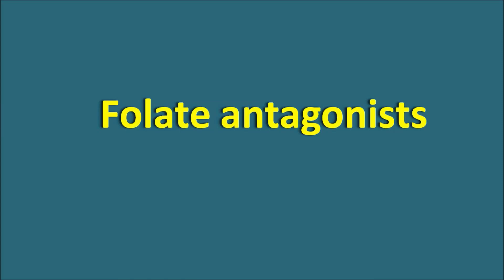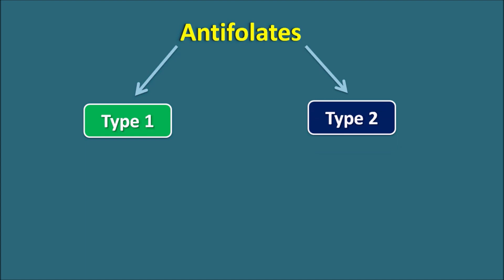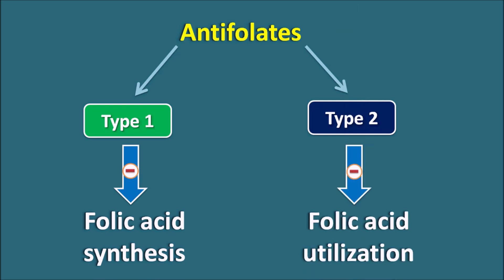Hi everyone. Today in this video we are going to discuss the folate antagonists. Folate antagonists can also be called as antifoliates, which can be classified into two types: Type 1 antifoliates and Type 2 antifoliates. Type 1 antifoliates are going to inhibit the folic acid synthesis, whereas Type 2 antifoliates are going to inhibit the folic acid utilization.